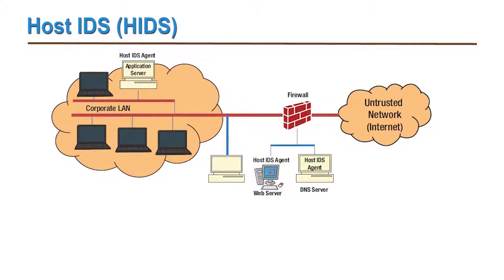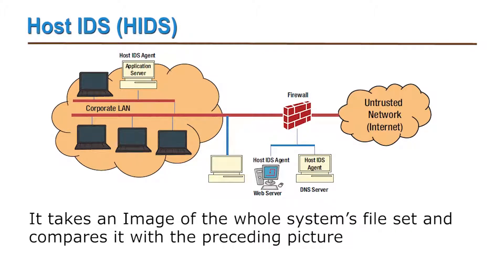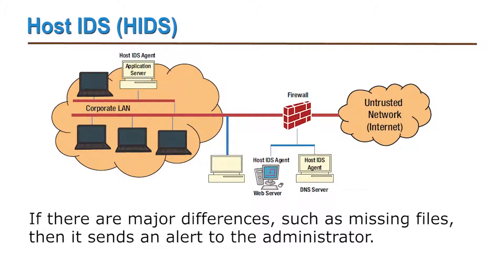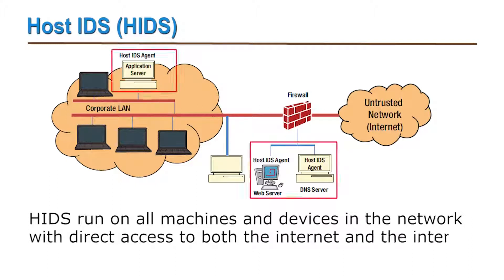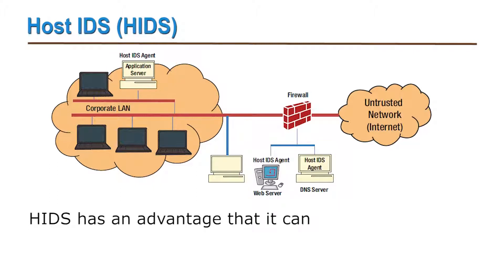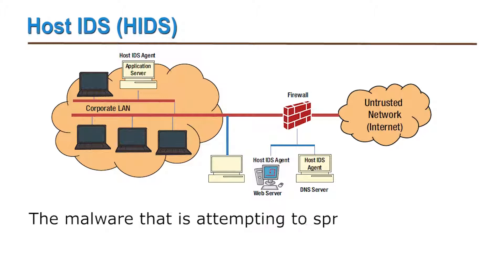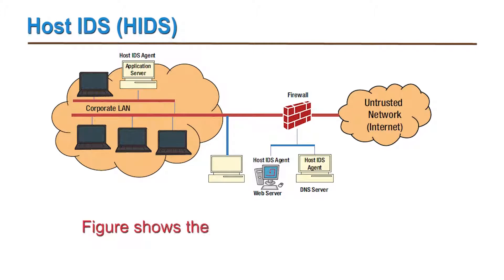The third category is the host IDS, or HIDS. It takes an image of the whole system's file sets and compares it with the preceding picture. If there are any major differences such as missing files, it sends an alert to the administrator. HIDS runs on all machines and devices in the network with direct access to both the internet and the internal network. HIDS has the advantage that it can detect malicious network packets that originate from the inside, or malware attempting to spread within the network that NIDS has failed to detect.